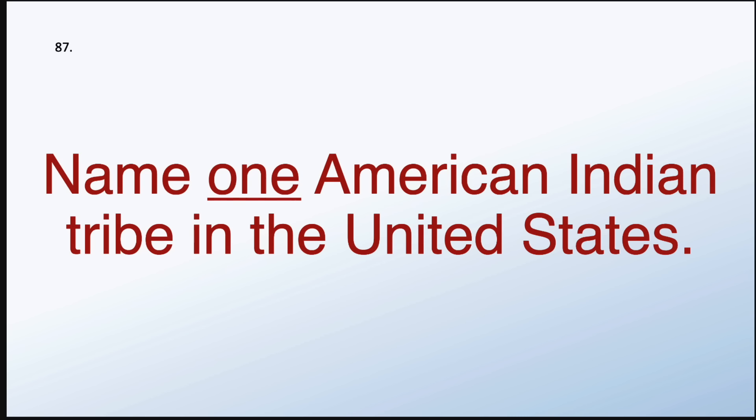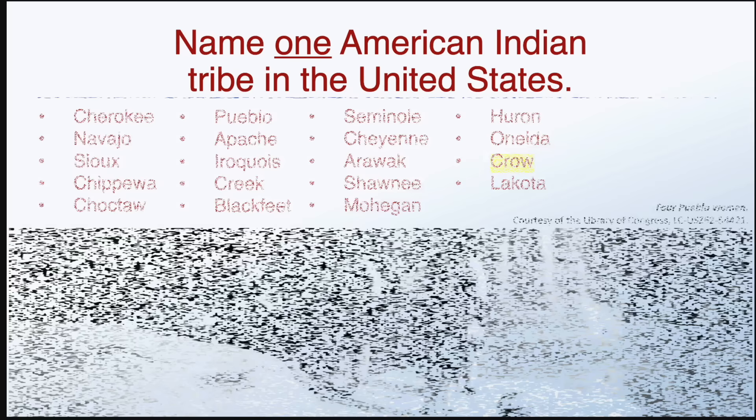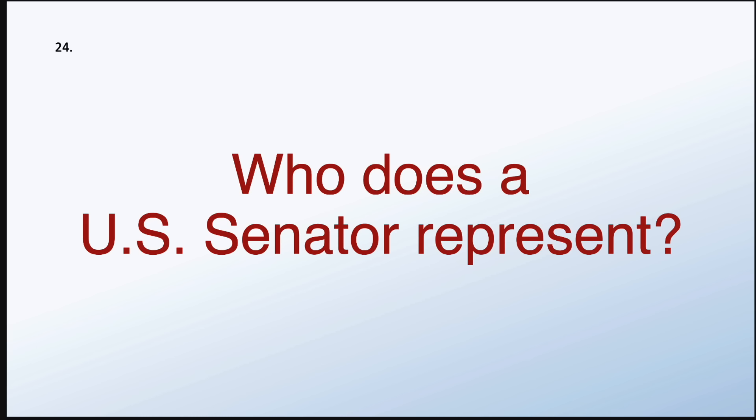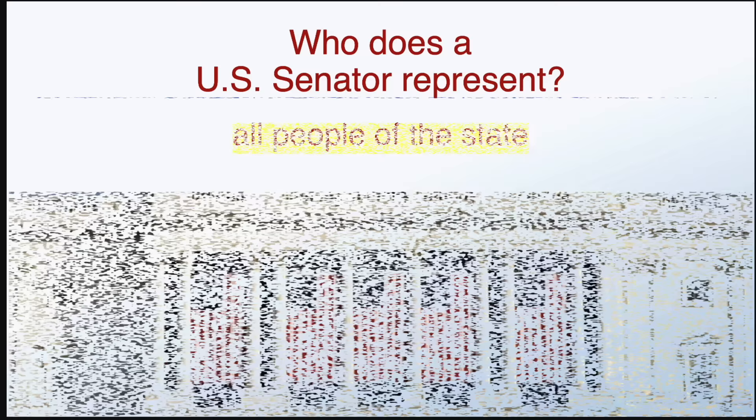Name one American Indian tribe in the United States. Crow. What does the president's cabinet do? Advises the president. Who does a U.S. senator represent? All people of the state.